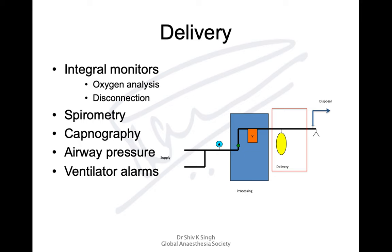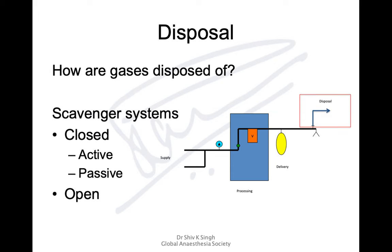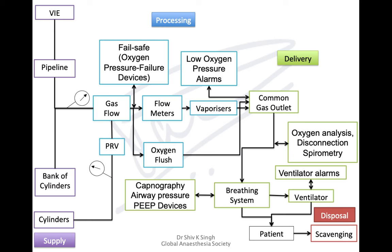There are integral monitors for the oxygen amount delivered to the patient, disconnection alarms within the breathing circuits, integrated spirometry, capnography, airway pressure monitoring devices, and ventilator alarms. For disposal, gases not used by the patient are disposed of via the scavenging system, which can be open type or closed — either active or passive.